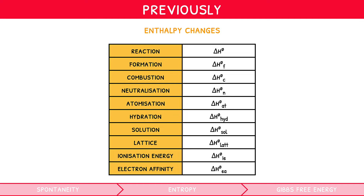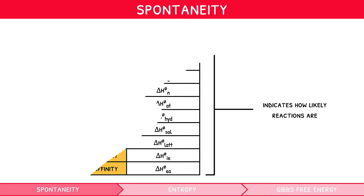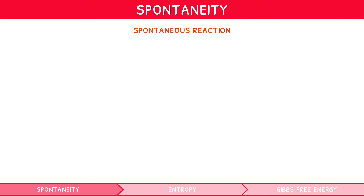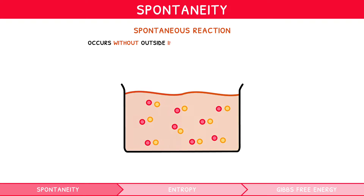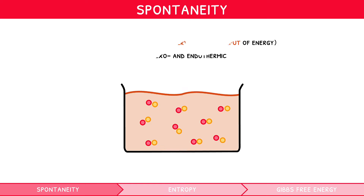Our previous Topic 5 and 15 videos have introduced many types of enthalpy changes. But what do these all tell us about a reaction? They indicate how likely they are to occur, known as their spontaneity. A spontaneous reaction is a reaction which occurs without outside intervention — i.e., no input of energy. These reactions can be both exo- and endothermic, although typically we think of exothermic examples. However, spontaneity cannot be determined from enthalpy alone.